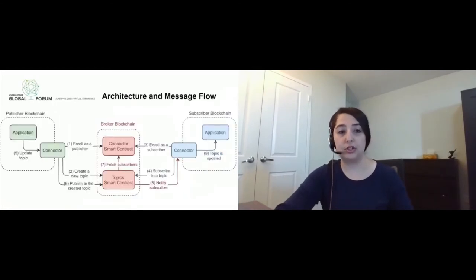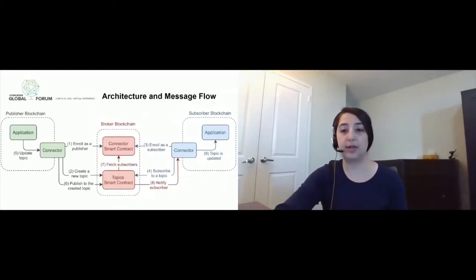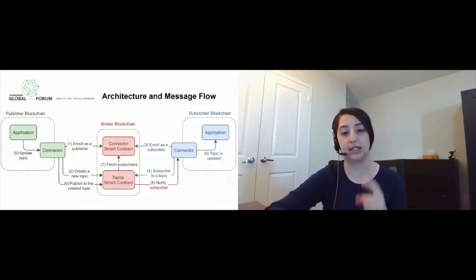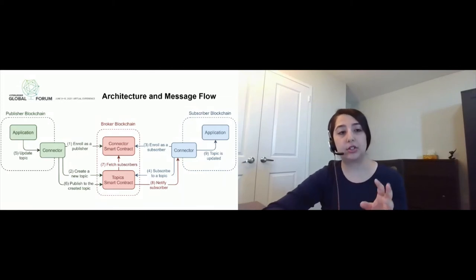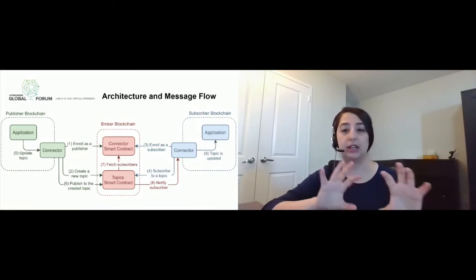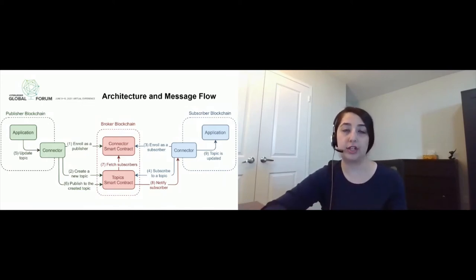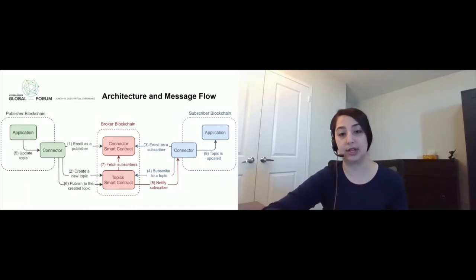So now I want to go into the details of our solution. Our idea was to use the publish-subscribe architecture to enable interoperability. Here we have a broker blockchain that comes in the middle, and it has two smart contracts: the connector and the topic smart contract. The connector smart contract is responsible for handling all the connections to different blockchains and the networking. The topic smart contract holds the information about the assets that are being transferred.